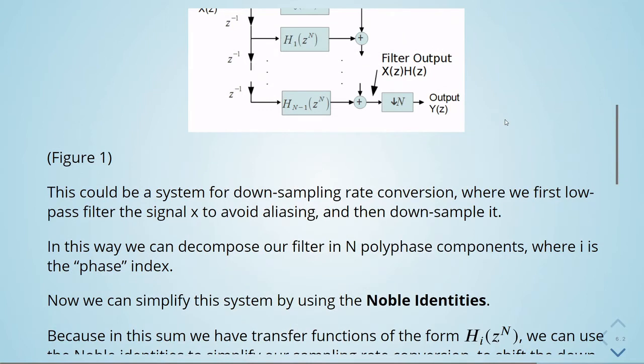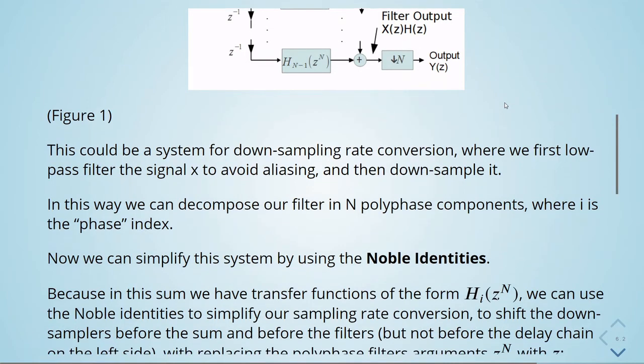This could be a system for down-sampling rate conversion where we first low-pass filter the signal x to avoid aliasing and then down-sample it. In this way we can decompose our filter in N polyphase components where i is the phase index.